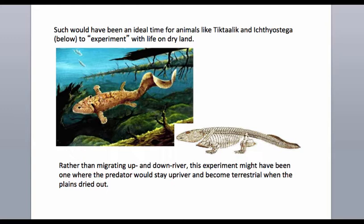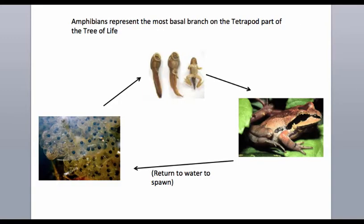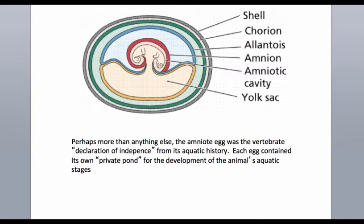Some of these early vertebrates would have been things like Ichthyostega and Tiktaalik — a famous fossil described by Neil Shubin of the University of Chicago, discovered in Greenland, which during the Devonian would have been mid-continent and subtropical, exactly the same type of habitat as the Pantanal. Modern amphibians — tetrapods that are not amniotes — return to water to spawn, and this was presumably the ancestral state for all tetrapods. It was only the amniotes during the Carboniferous that figured out a way to complete their entire life without going back to their aquatic origins. The amniotic egg is the major innovation of that lineage, of which we have two different forms: synapsids and diapsids.